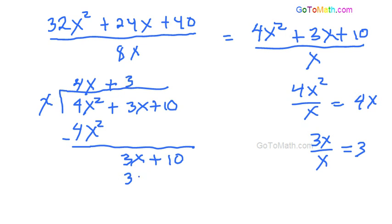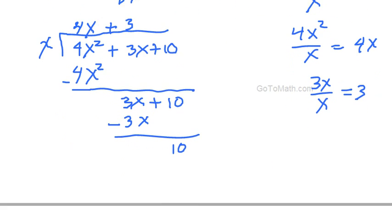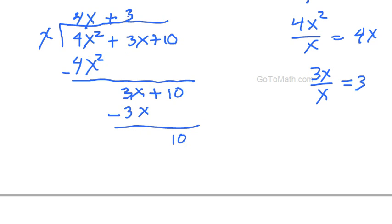So we end up with plus 3. Then we multiply 3x, right? And then do the minus sign there and we end up with 10. So to write this out now, we're going to say 4x plus 3 plus, and then we'll write 10 over x.